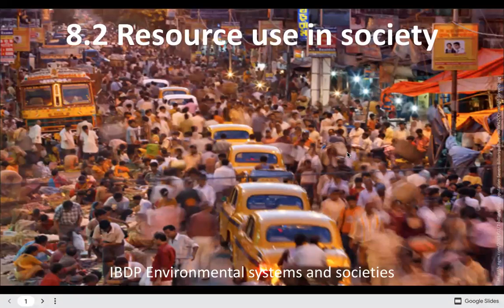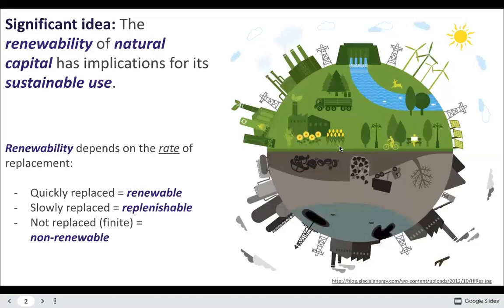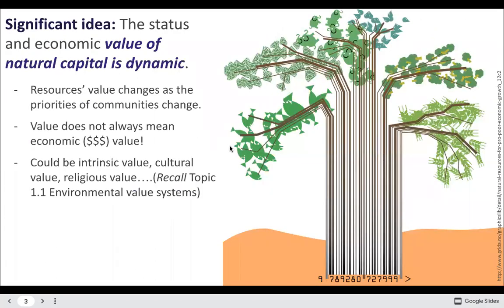8.2 Resource Use in Society. The renewability of natural capital has implications for its sustainable use. If it's more renewable, it's easier to use it sustainably. Whereas if it's less renewable, it's harder to use it sustainably. There's also that in-between category — replenishable things like groundwater. The rate of replacement is what affects the renewability of different resources.